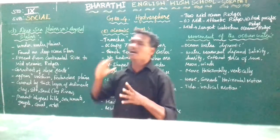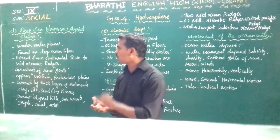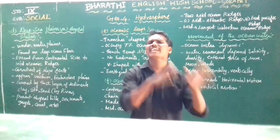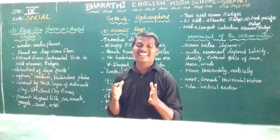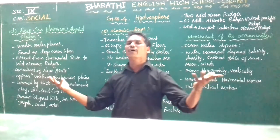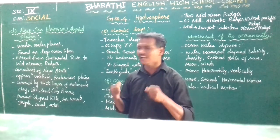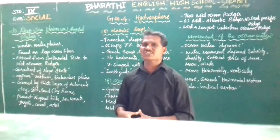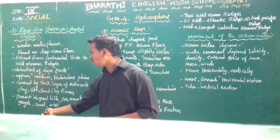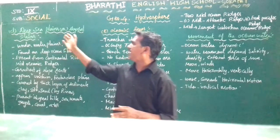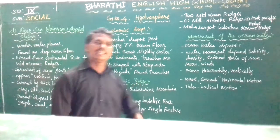What is present in these plains? Features like abyssal hills, seamounts, and coral formations are found here. So that is the information about deep sea plains or abyssal plains — they are one of the important relief features of the ocean floor.